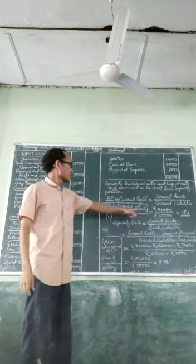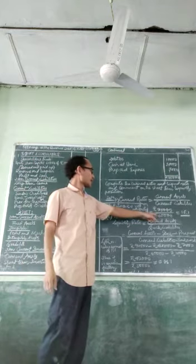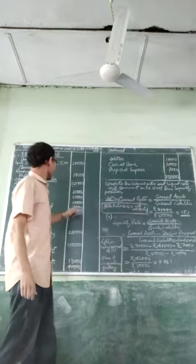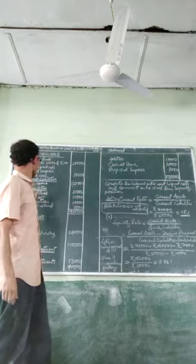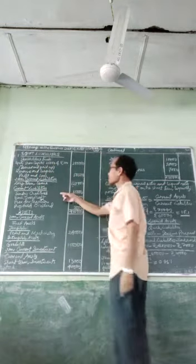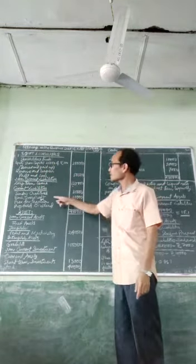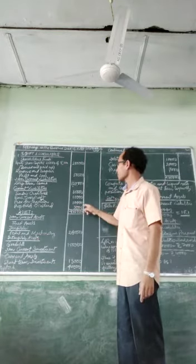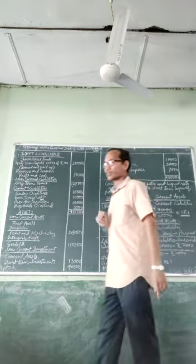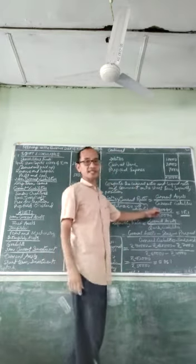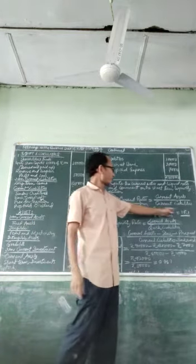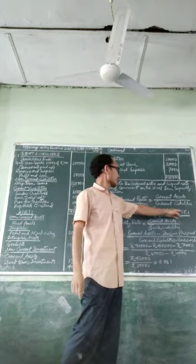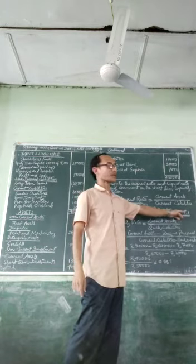Rs.90,000 divided by the current liabilities. The current liabilities are: sundry creditors Rs.35,000, bank overdraft Rs.10,000, provision for taxation Rs.10,000, and proposed dividend Rs.5,000 — totalling Rs.60,000. So Rs.90,000 divided by Rs.60,000 gives a current ratio of 1.5, that is 1.5 is to 1.